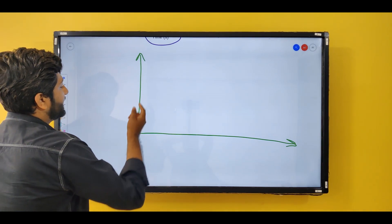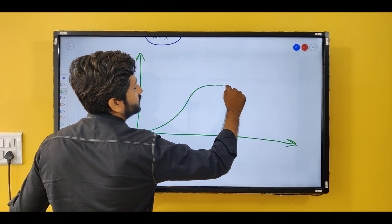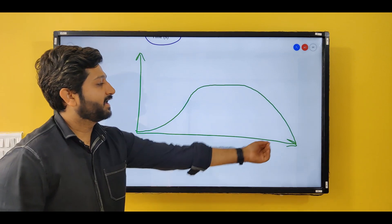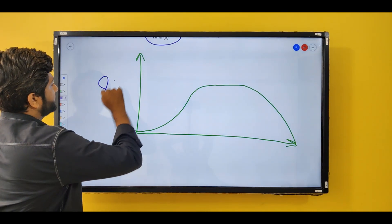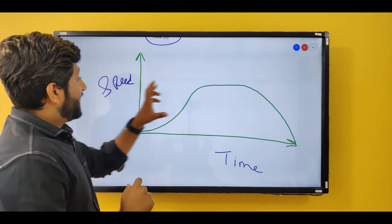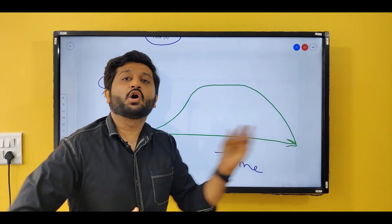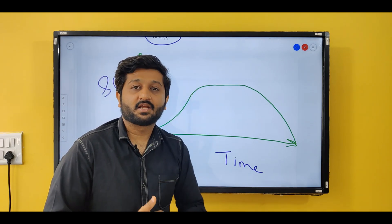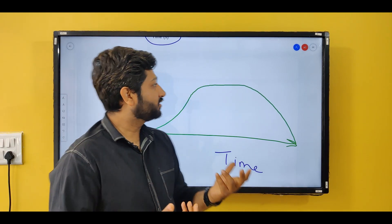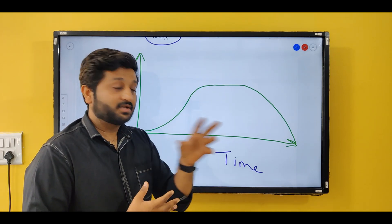In reality, let's say I'm leaving from home — my speed gradually increases, then I stop at a signal so my speed is zero, then I apply the brake and my speed is zero again. This is a curved speed-time graph. In this graph, if I want to find acceleration or distance, how will I do that? Because this is not a straight line.